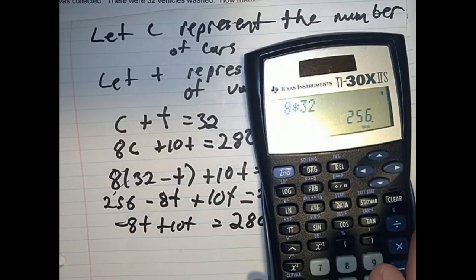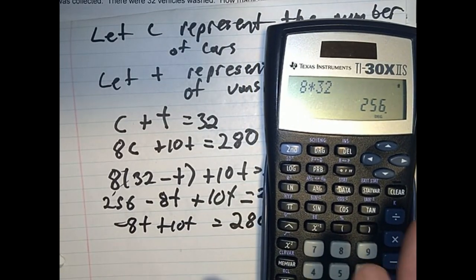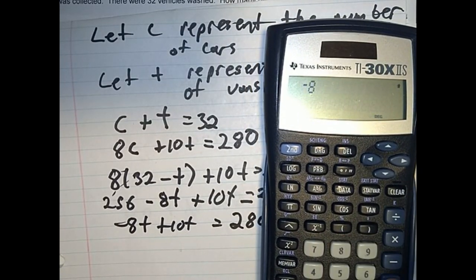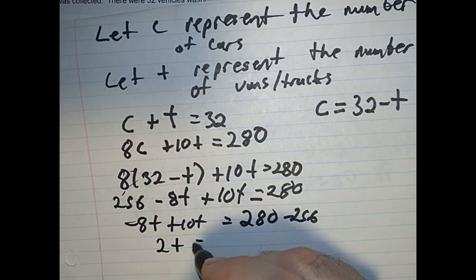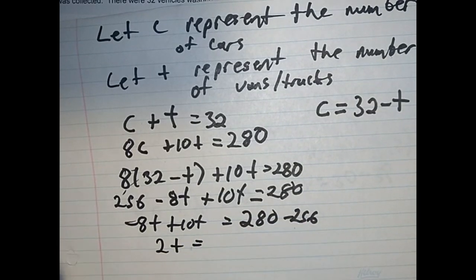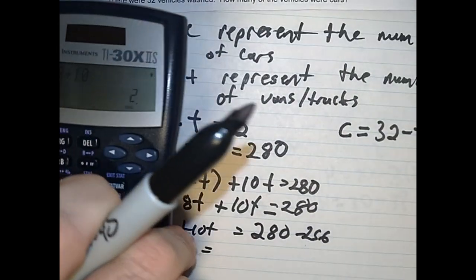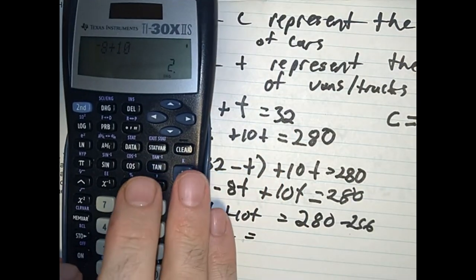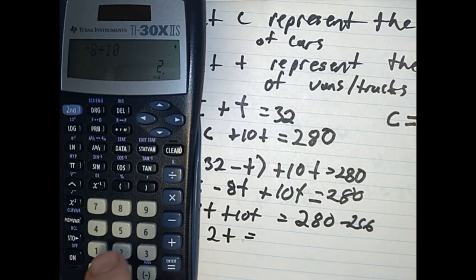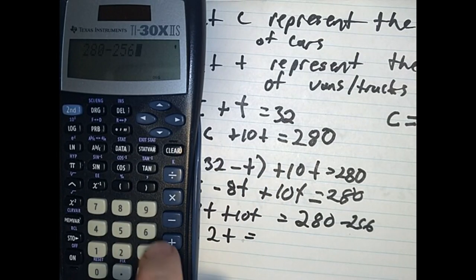Negative 8 plus 10 is 2. This is 2T. 280 minus 256. Let's get my calculator. 280 minus 256 equals 24.